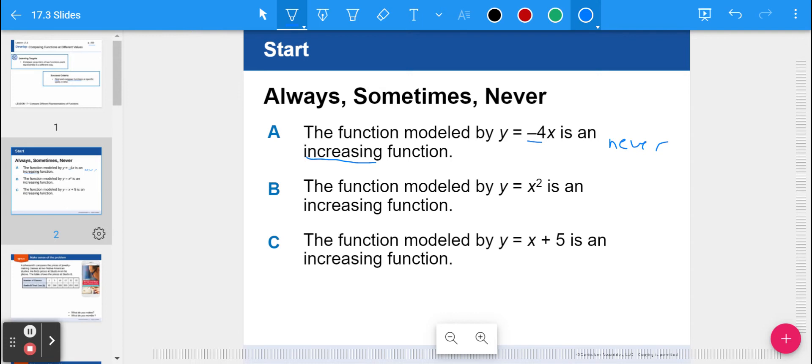B, the function modeled by y equals x squared is an increasing function. That's a quadratic function. It has an exponent there. So we're going to actually say sometimes. And C, the function modeled by the equation y equals x plus 5 is an increasing function. That is always true because the slope is what determines if it's increasing or decreasing. That slope would be a 1, so it's positive.